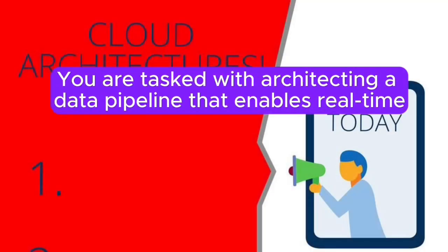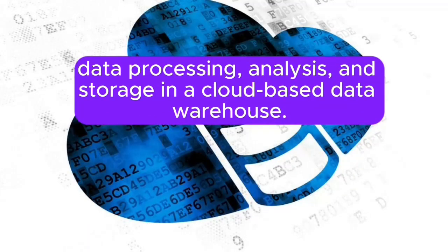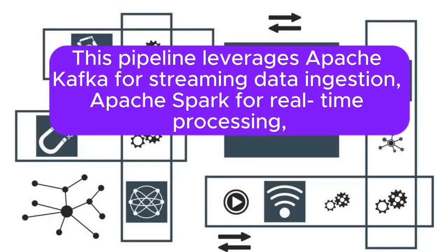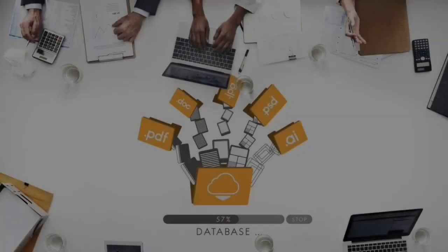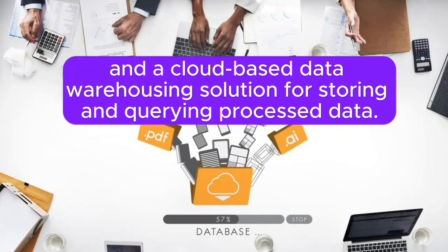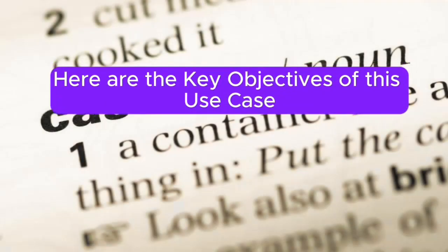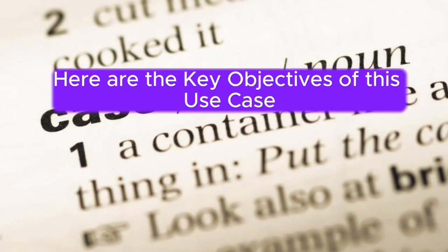Scenario: You are tasked with architecting a data pipeline that enables real-time data processing, analysis, and storage in a cloud-based data warehouse. This pipeline leverages Apache Kafka for streaming data ingestion, Apache Spark for real-time processing, and a cloud-based data warehousing solution for storing and querying processed data. Here are the key objectives of this use case.